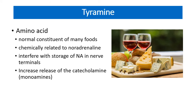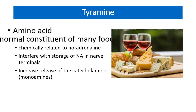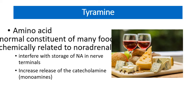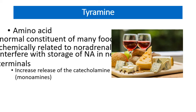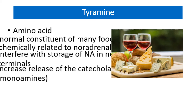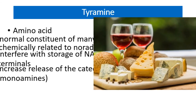Tyramine is an amino acid found in normal constituents of many foods and body tissues. It is chemically related to noradrenaline (norepinephrine). Tyramine interferes with the storage of noradrenaline at the nerve endings and acts by increasing the release of catecholamines. Tyramine-rich foods include red wine, dairy products like milk, cheese, paneer, ghee, butter, and yeast and fermented products. Tyramine also shows a noradrenaline-like action, that is, a hypertensive or vasopressive action.